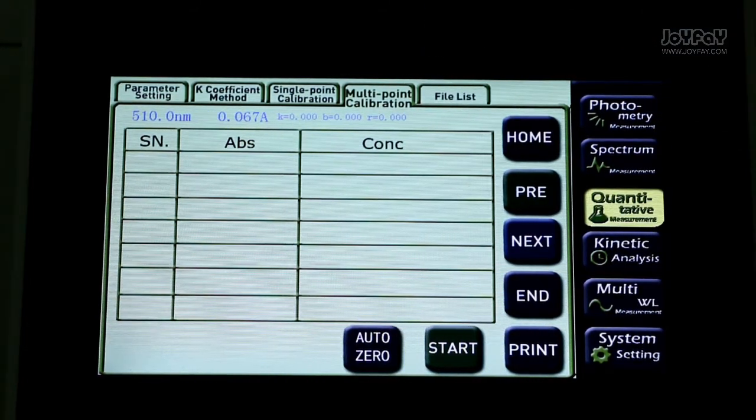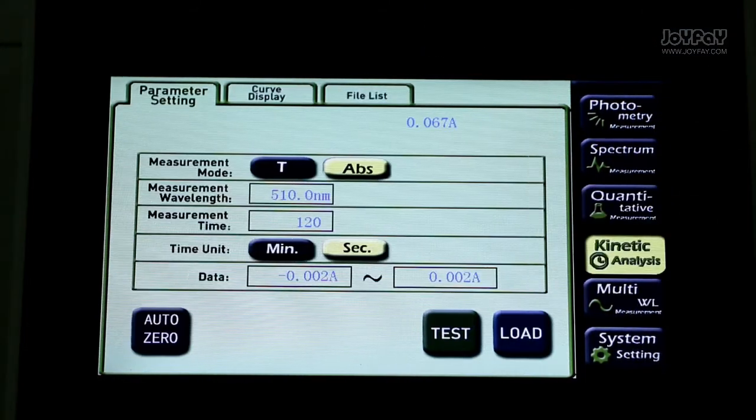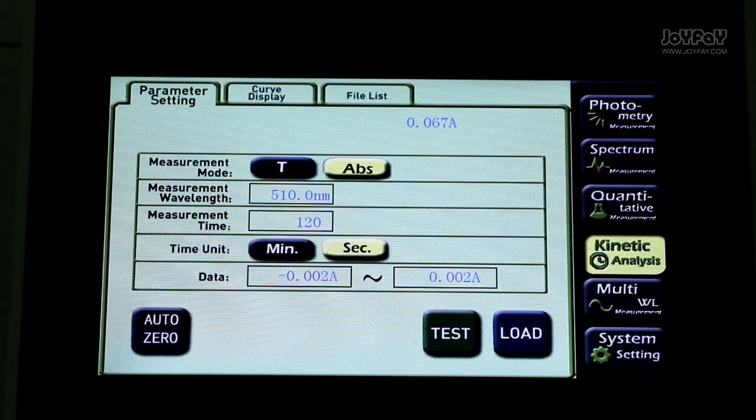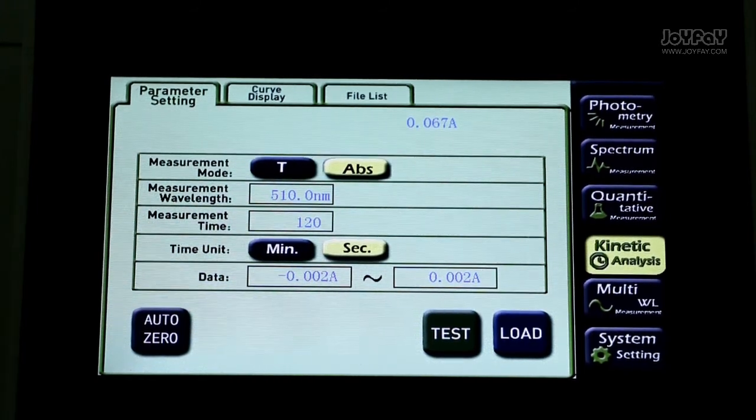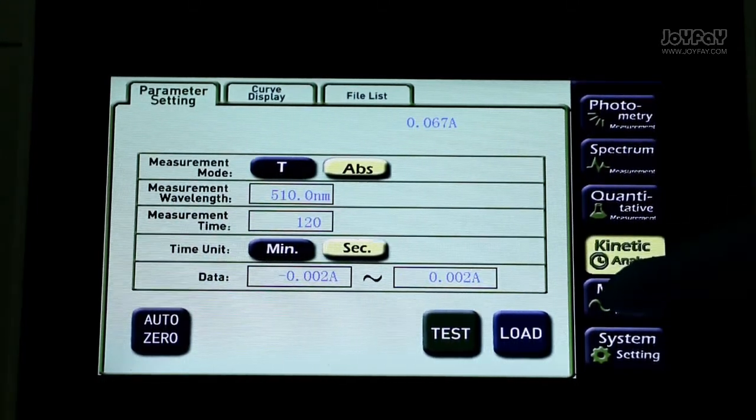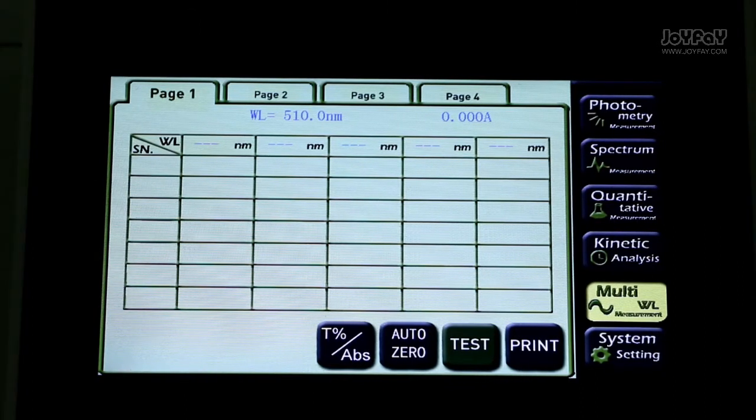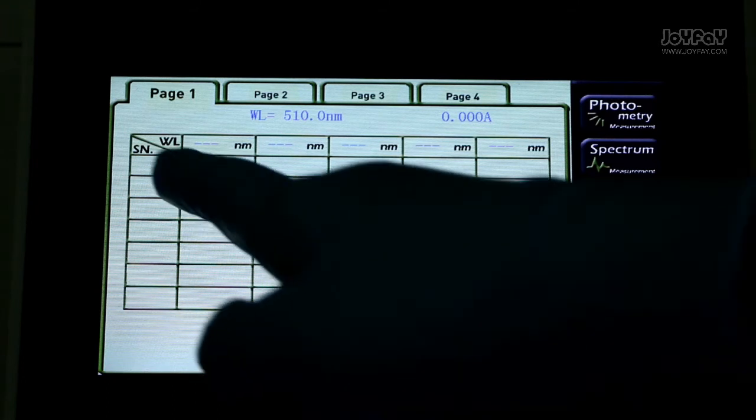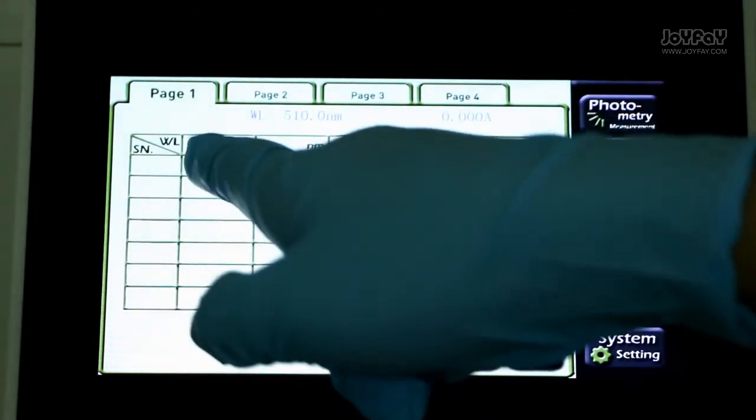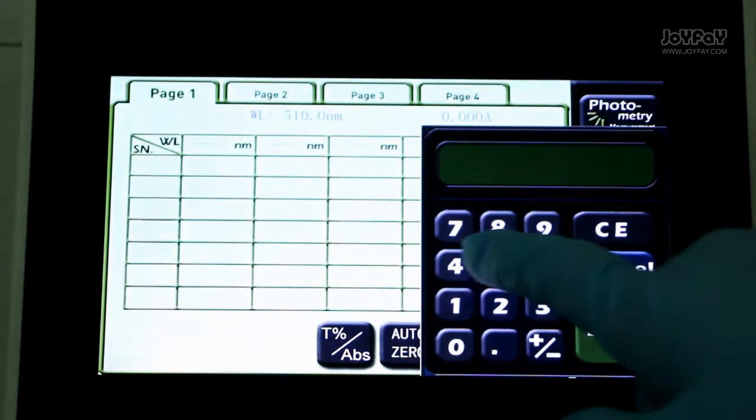The next one is kinetic analysis. We can see how the concentration changes over time in this measurement. In this measurement, you can test the absorbance values of the same sample at different wavelengths. Press the blank box here to set wavelengths and the number of the sample correct.